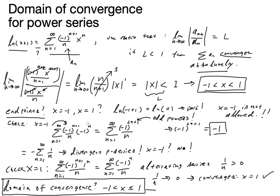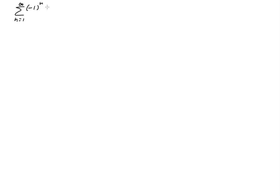Now I'm going to do a different example — just a slight variation on what we've already done. The second example is the sum from n equals 1 to infinity: it's an alternating series with x minus 1 to the n as our power, all over n times 2 to the n. Again, these are our a_n coefficients, and we're going to use the ratio test just as before.